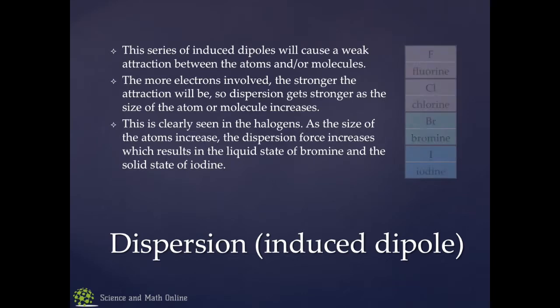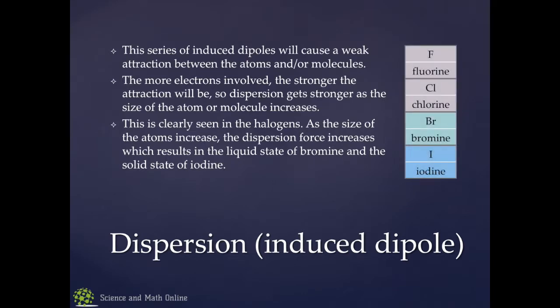We can see this when we look at the halogens. Fluorine and chlorine are the smallest and they're gases because they have a weak attraction between them. Bromine has more electrons and there's more attraction, and all of a sudden we go from a gas to a liquid. Iodine has the most electrons of the group — more electrons creates a stronger dispersion force, strong enough to make it a solid at room temperature. So dispersion is the weakest of the three forces, but it is always present, and depending on the size of the molecule, it may actually be the most important.